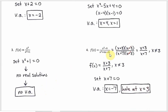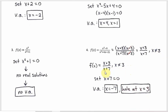In example four, both numerator and denominator factor, and there's a common factor of x minus three that cancels. The reduced form is x plus three over x plus seven, but you must also note that x cannot be three because that gives zero over zero in the original — that's where the hole is. The vertical asymptote is x equals negative seven, and there's a hole at x equals three.